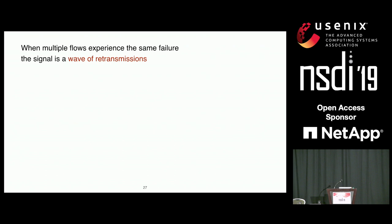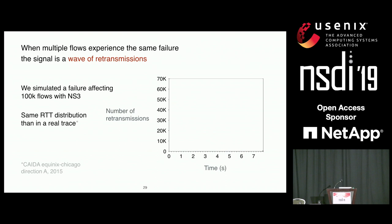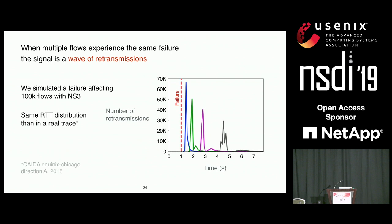To illustrate this, we simulated a failure affecting 100,000 flows using the NS3 simulator, using the same RTT distribution we observed in real traffic, since RTT is an important parameter for computing the retransmission timeout. Here is the number of retransmissions over time across all 100,000 flows — we simulated the failure at second one. Quickly after the failure, we see the first retransmissions, then the second, third, fourth, and so on. The signal has very high amplitude and appears quickly after the failure, and this behavior always happens when several TCP flows are all affected by the same failure.